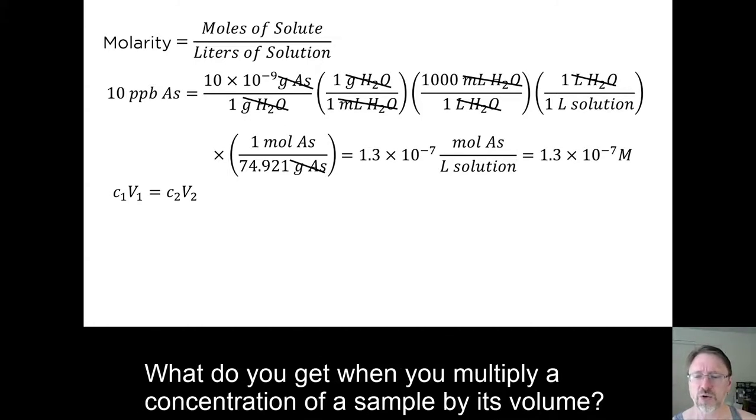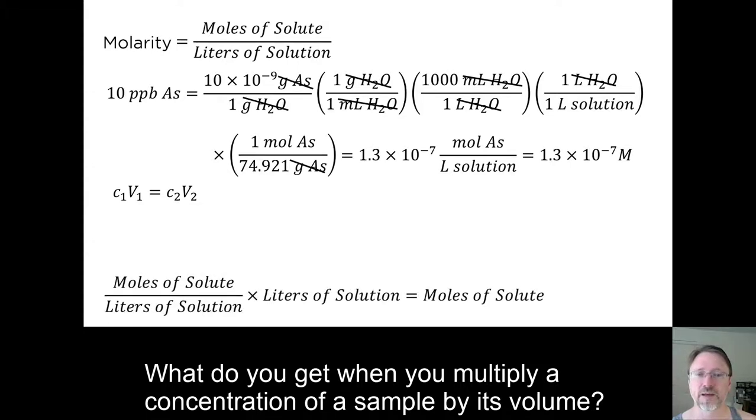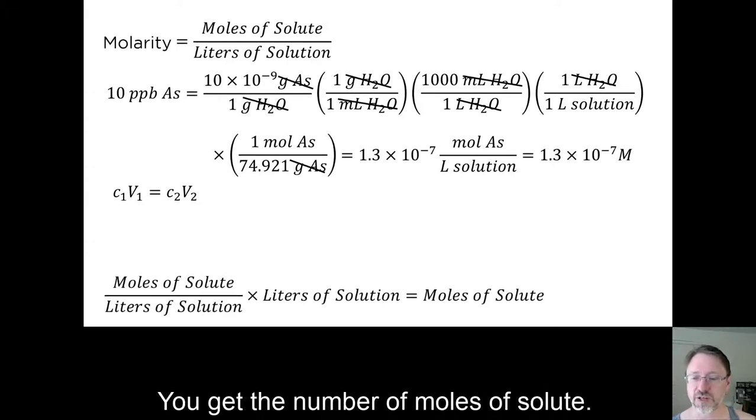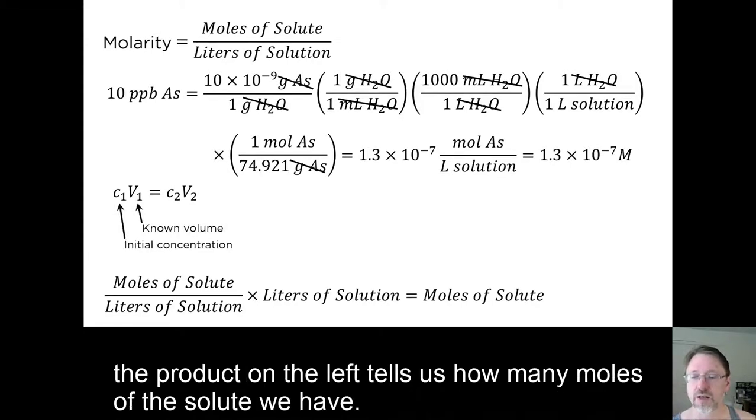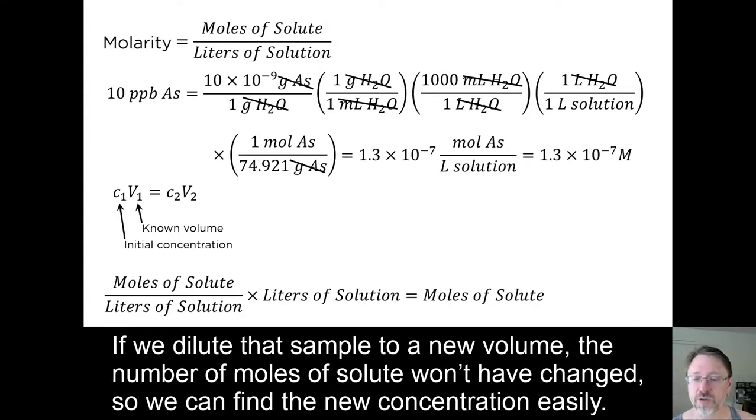You get the number of moles of solute. So this equation is saying that if we take a known volume of a concentrated solution, the product on the left tells us how many moles of the solute we have. If we dilute that sample to a new volume, the number of moles of solute won't have changed. So we can find the new concentration easily.